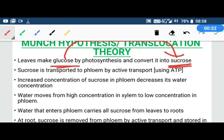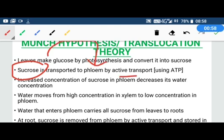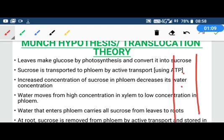Second, sucrose is transported to phloem by active transport using ATP. When we use ATP, we call it active transport. This decreases the water concentration in the phloem.